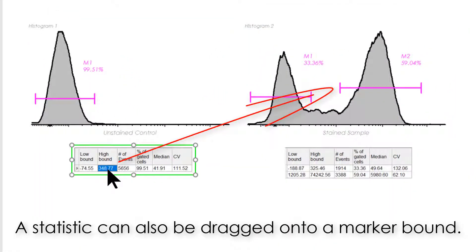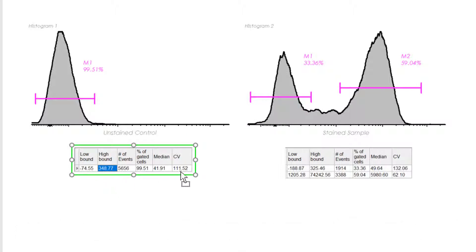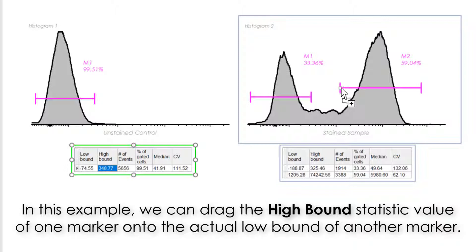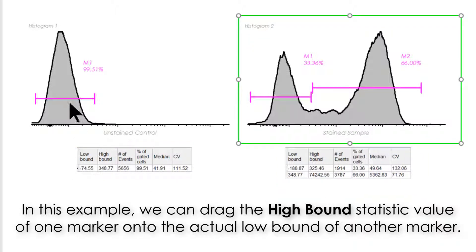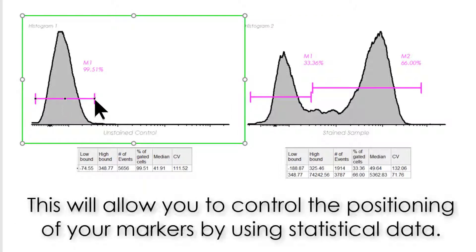A statistic can also be dragged onto a marker bound. In this example, we can drag the high bound statistic value of one marker onto the actual low bound of another marker. This will allow you to control the positioning of your markers by using statistical data.